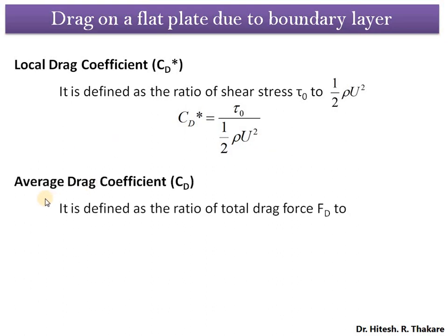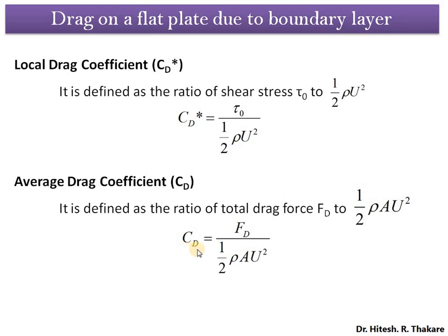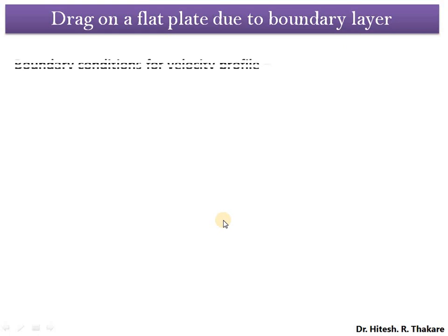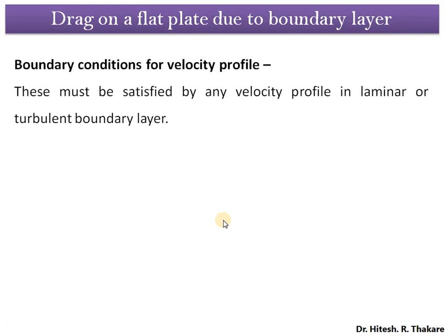The local drag coefficient applies to one particular location on the flat surface. Most of the time, however, we are interested in the drag coefficient for the overall surface, which is why we need the average drag coefficient. It is defined as the ratio of total drag force F_D to the quantity ½ρAU², so mathematically: C_D = F_D / (½ρAU²).